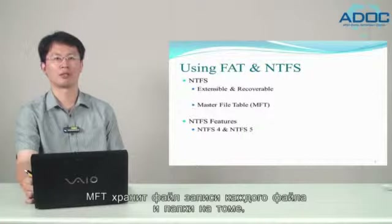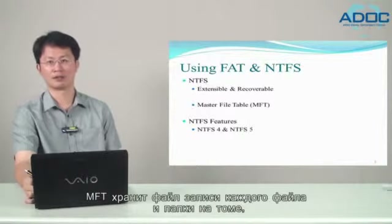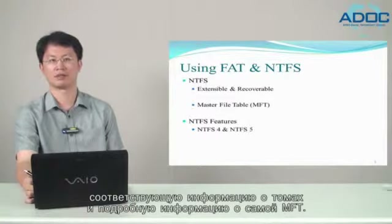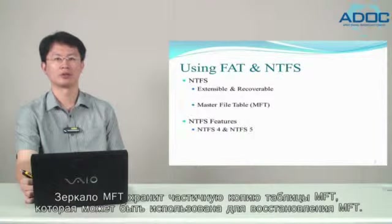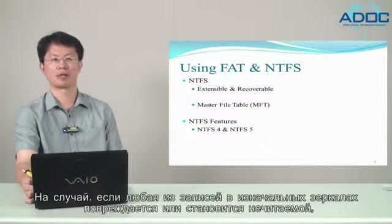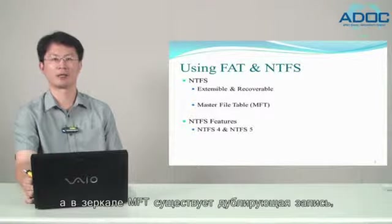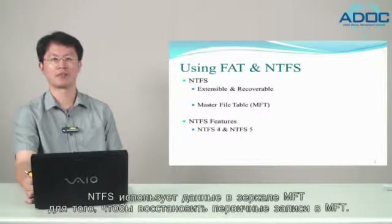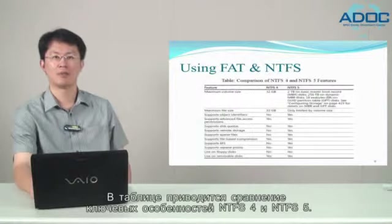NTFS stores the file records of each file and folder on the volume, along with pertinent volume information and details on the MFT itself. The MFT mirror stores a partial duplicate of the MFT that can be used to recover the MFT. If any of the records in the primary MFT become corrupt or are otherwise unreadable, NTFS uses the data in the MFT mirror to recover the records in the primary MFT. A table provides a comparison of key features of NTFS 4 and NTFS 5.